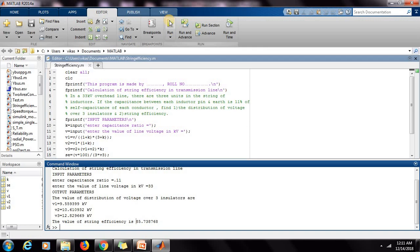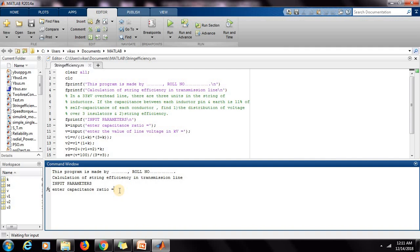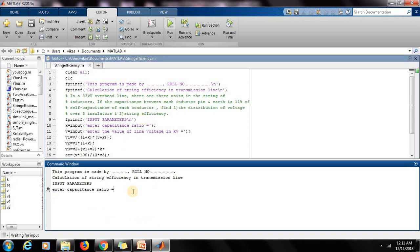Now we can easily check the effect of this K on string efficiency by varying the value of K. Now again I have run the program with capacitance ratio reduced to 0.05 and voltage is same, 33. Now as you can see, the value of string efficiency is 92%. In the previous example, for K is 0.11, string efficiency was 85%, and if K is 0.05, then string efficiency is 92%.